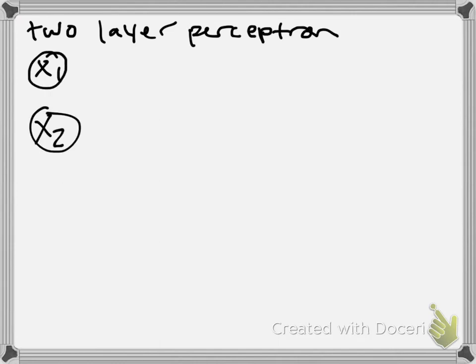Okay, now we are going to talk about a two-layer perceptron. The idea there is that now you have two layers of processing for your inputs.